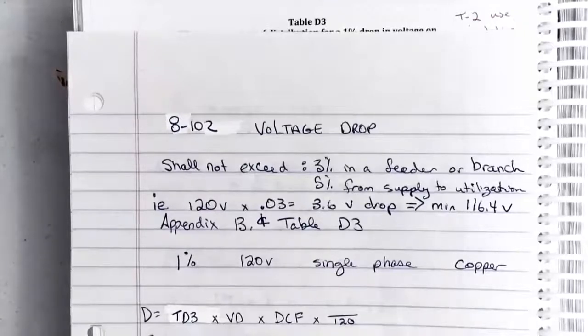The main formula that we use is D for distance in meters, and this is going to be the maximum distance that we can take that wire without exceeding the voltage drop. Table D3 - in table D3 are what I call the basic meters. So the basic distance that you could go with a certain size AWG, and we're going to adjust that using this formula, but we have to put the basic meters in here from the table.